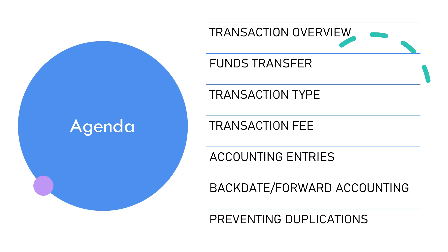Just as there are different flavors of ice cream, there are various transaction types. T24 uses this concept to classify different transaction scenarios. Each type represents a specific kind of financial dance, complete with its unique characteristics. The fourth topic is Transaction Fees — the direct source of profit from providing money transfer services and bill payments is from service fees, so transaction fee is an indispensable part of the Funds Transfer module.